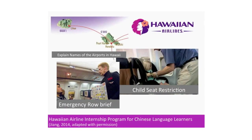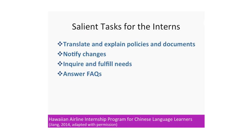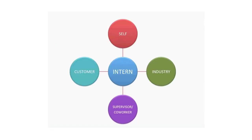For example, this is the Hawaiian airline internship program for Chinese language learners mentioned in the first lesson. Chinese students in upper-level classes serve as interns at the airport and help Chinese customers with various tasks. At first sight, there are some salient tasks for the interns, but if you really start thinking about it, there is a complex context and relationship between the intern, the customer, the workplace, and the people they interact with.